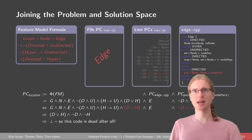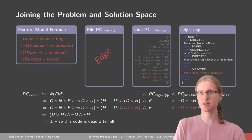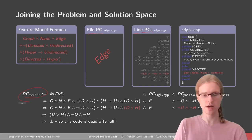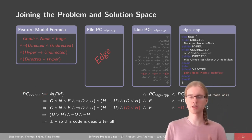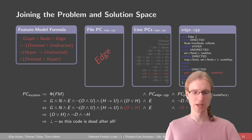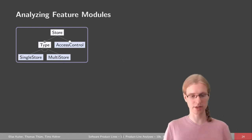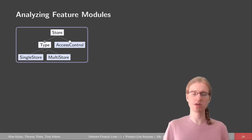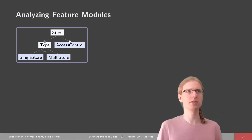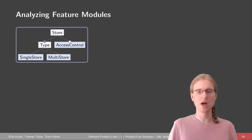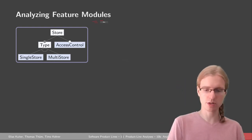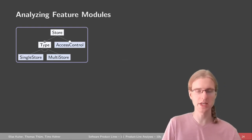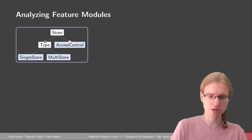This was all quite complex. To analyze all this variability, we had to extract line presence conditions, file presence conditions, conjoin them all together, and so on. One might ask whether there's a simpler way — and there is, if you choose another implementation technique. Up to now, we talked about preprocessors and build systems. But in lectures five, six, and seven we talked about many techniques, including feature-oriented programming, where each feature corresponds to one module.